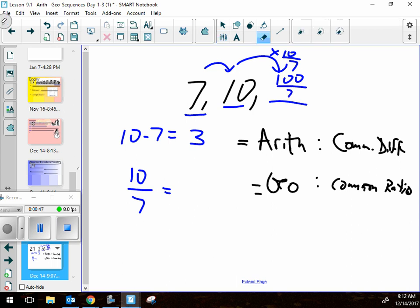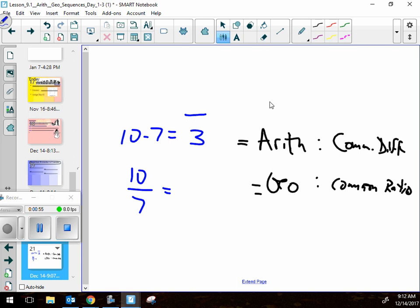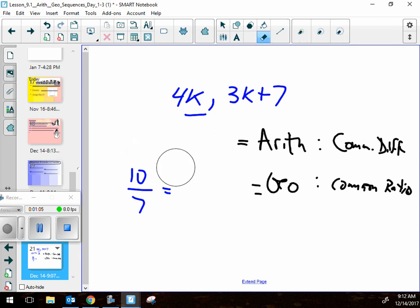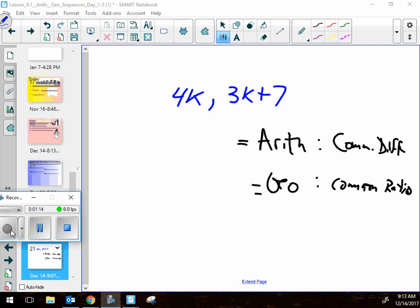Now I hope that you can handle it when I change this to instead of a 7 and a 10, I make it 4K and 3K plus 7. What's the common difference? What's the common ratio? Don't overthink this. Pause for a second while you give that a try. Common difference - difference means subtract. You just have to subtract them. Don't overthink this.